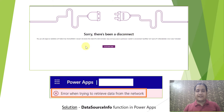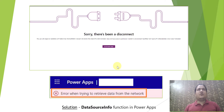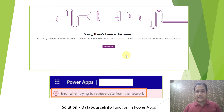Either they will get the message 'Sorry, there has been a disconnect,' which indicates a forbidden or permission-related error because they cannot edit anything in the environment, or in your custom PowerApps app they will get the error 'There is an error when trying to retrieve the data from the network.' These errors are not graceful and will leave users with no clear guidance.